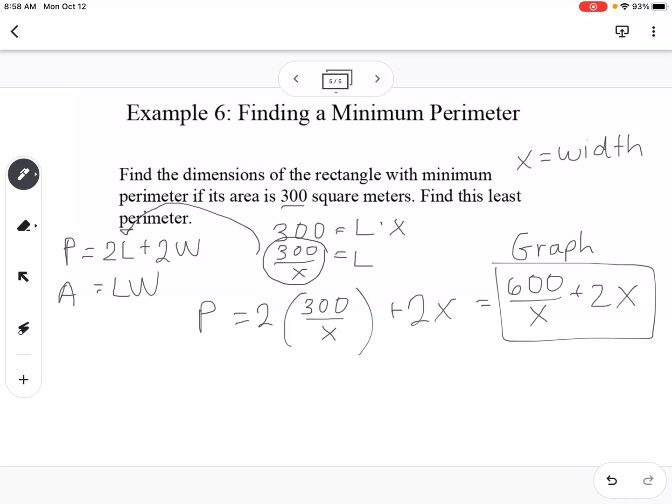So graphing is a good way to find minimums and maximums. So when you graph this, you're going to get a graph that looks like this, and if you can't see this, like if you're graphing it in Desmos, zoom way out, and then you will be able to see it. So it kind of looks like a parabola that's slanted a little bit, so we want to find that minimum value right there. So the minimum value occurs at 17.32 and 69.28.